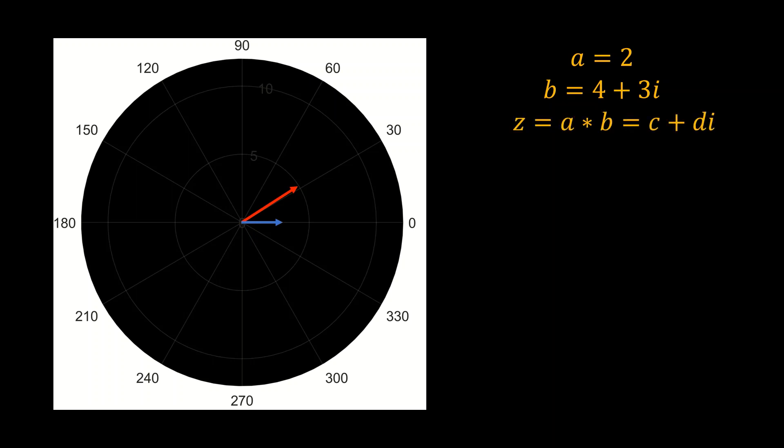Then a complex number 4 plus 3i. The 2 is having an angle of zero degrees and the 4 plus 3i is having an angle of 36 degrees. The magnitude is given by square root of c squared plus d squared, and angle is tan inverse of d by c.